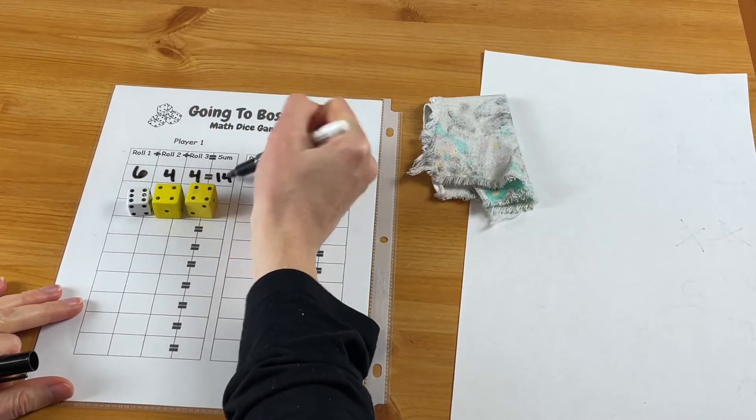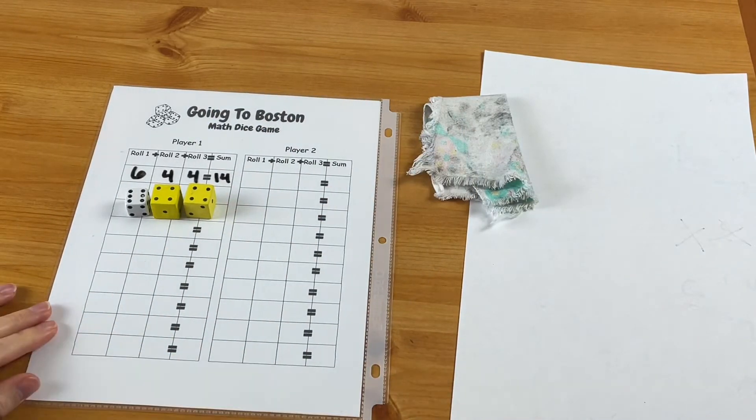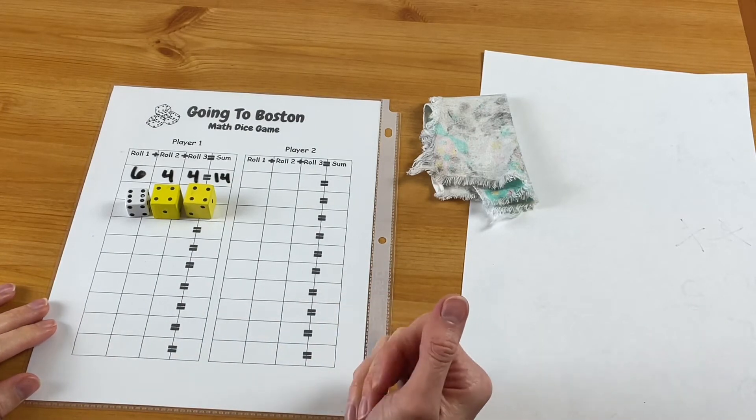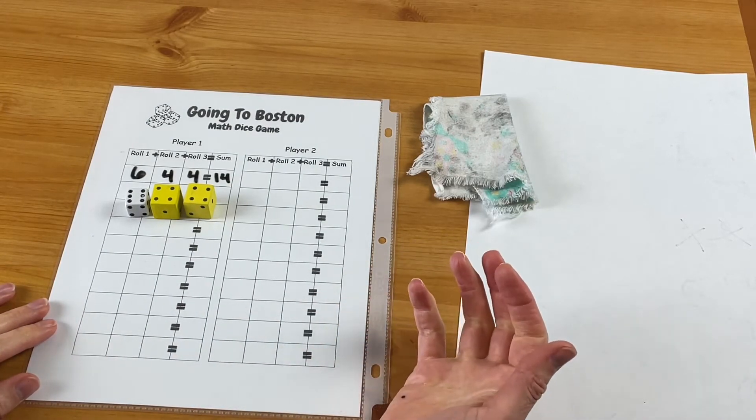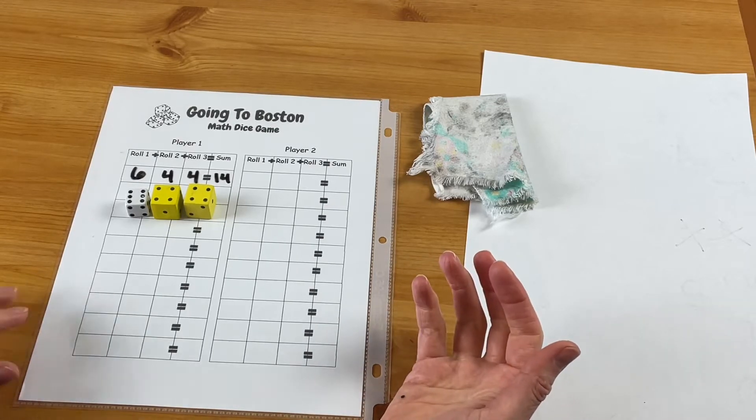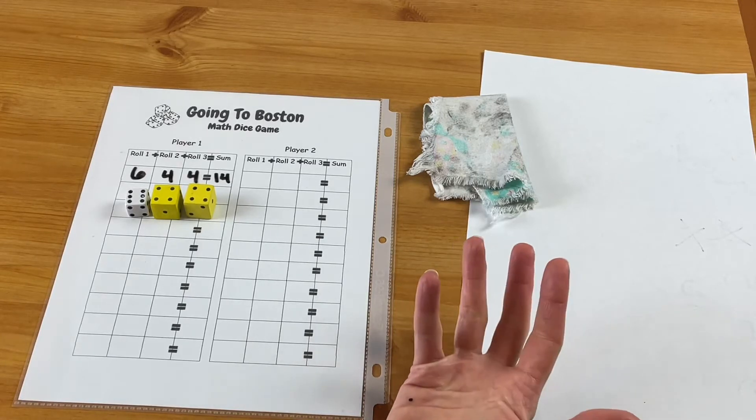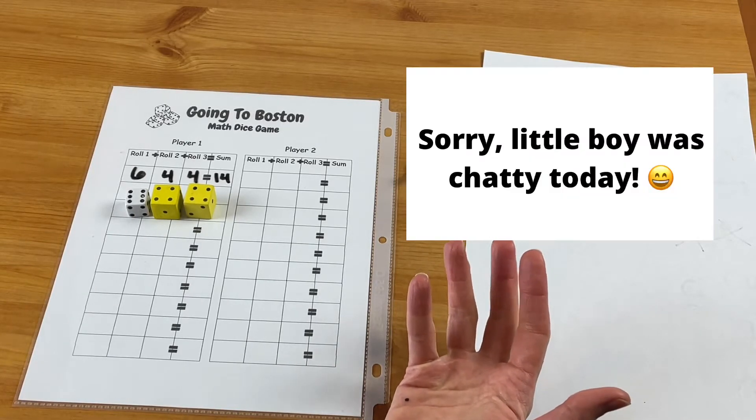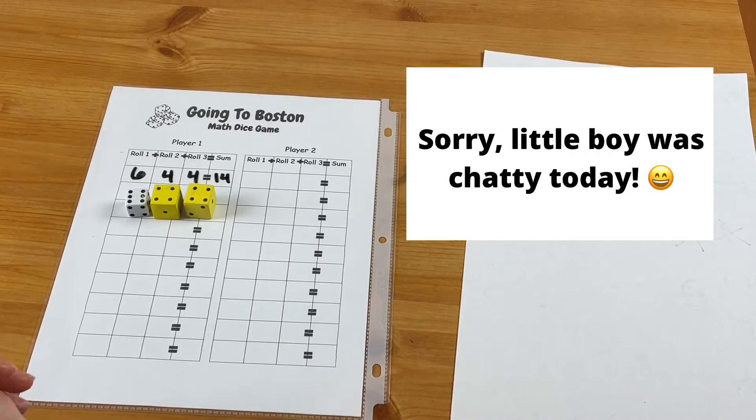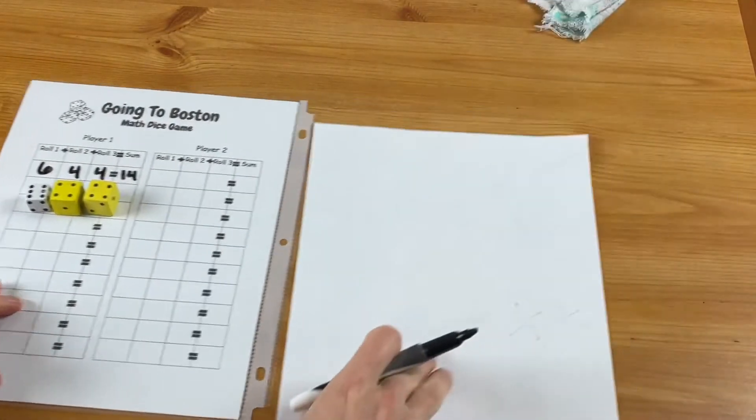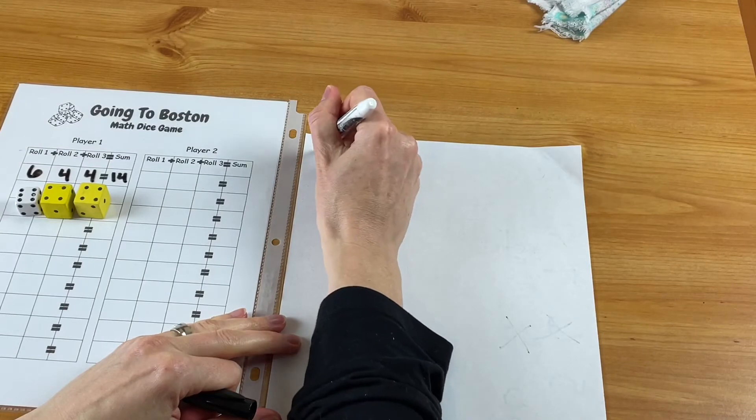So this game is nice - they're having to do a lot of things here. They're having to find the bigger number and then having to roll again and add three digits together, so there's a little bit more involved. You also could move to four dice.